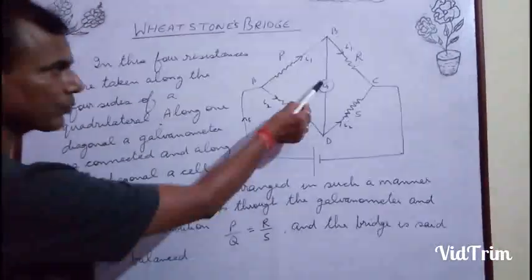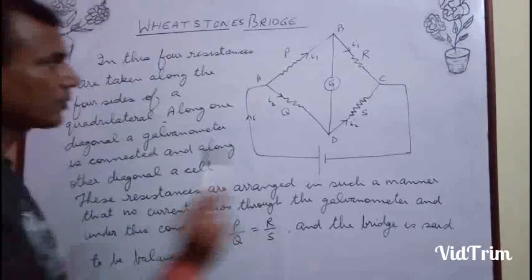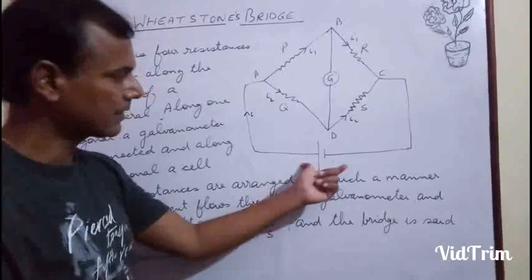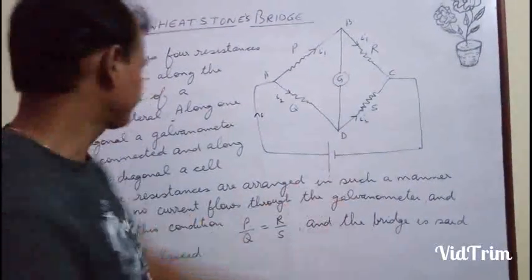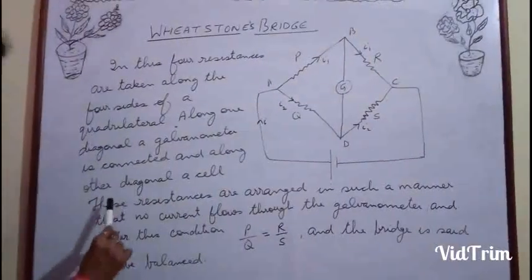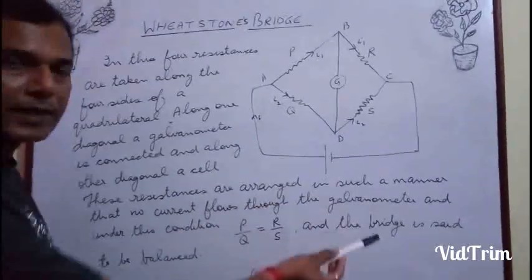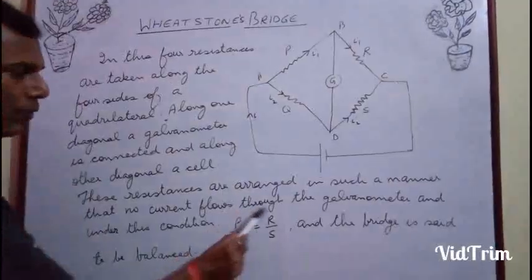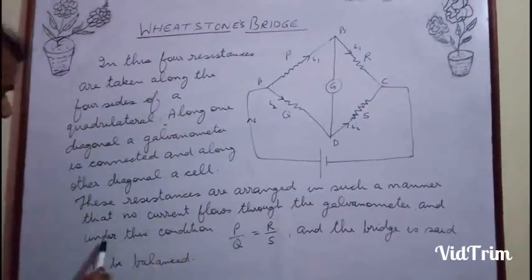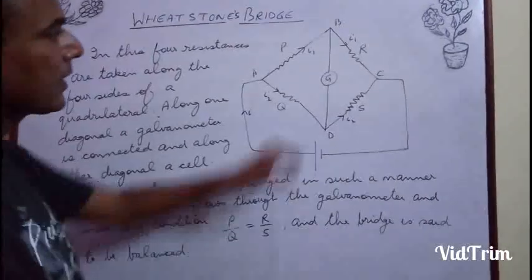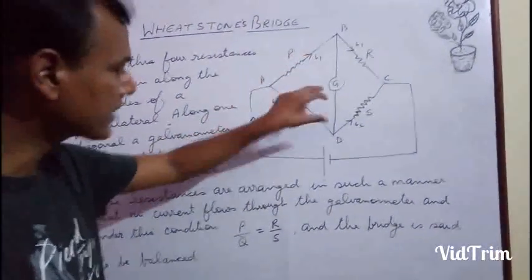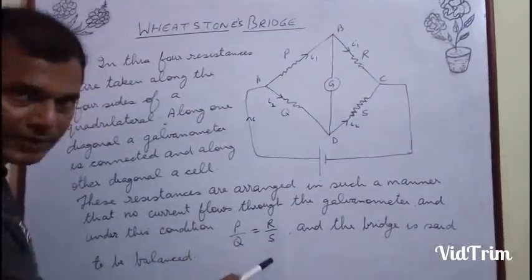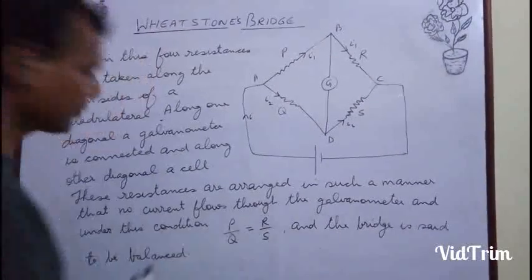If we interchange their positions, it hardly matters. But it should be clear that along one diagonal there should be a galvanometer, and along the other diagonal the cell should be connected. These resistances are arranged in such a manner that no current flows through the galvanometer. Under this condition, when no current flows through the galvanometer, it is seen that P upon Q is equal to R upon S.